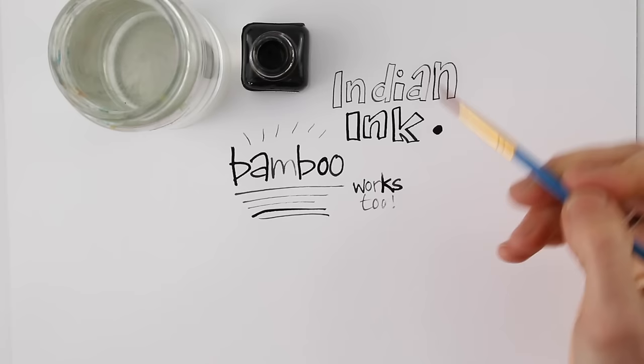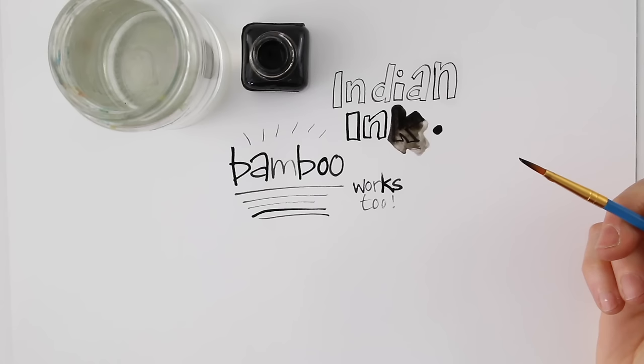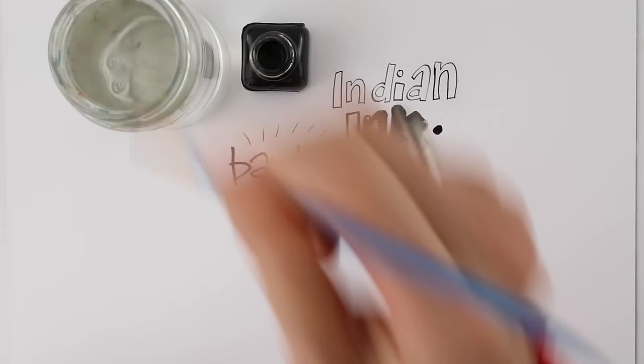On these bold letters, the ink hasn't dried yet. So when I add water, the ink fans out. I can make use of that and activate the ink to create shadows, for example, or I could use the ink to color the letters completely.